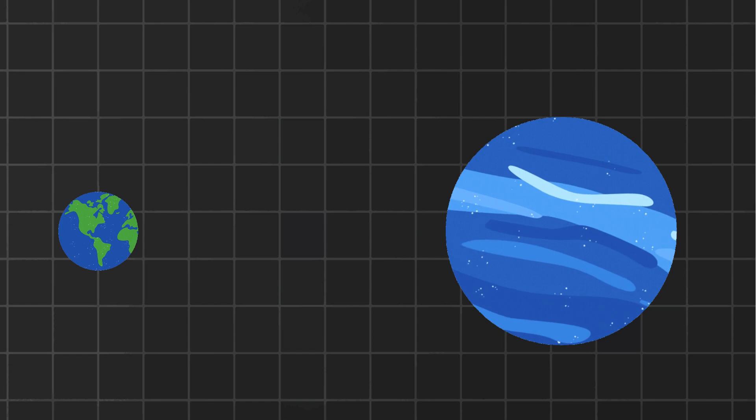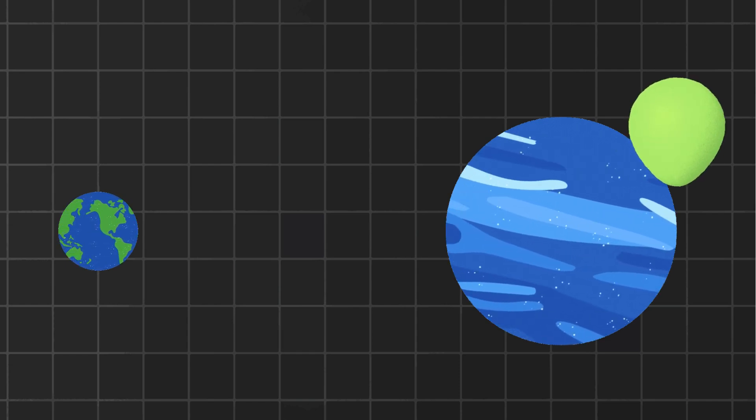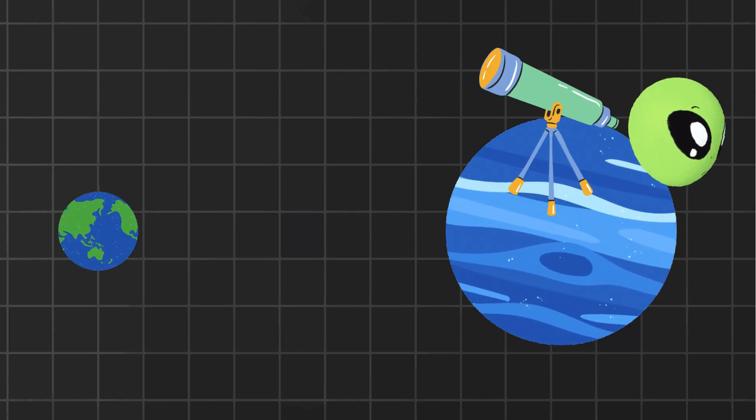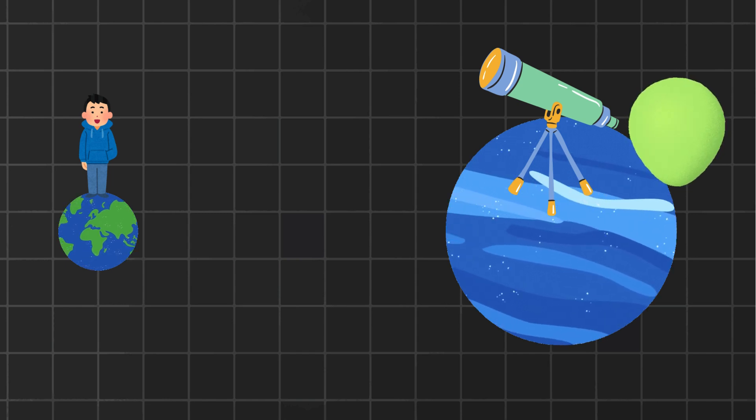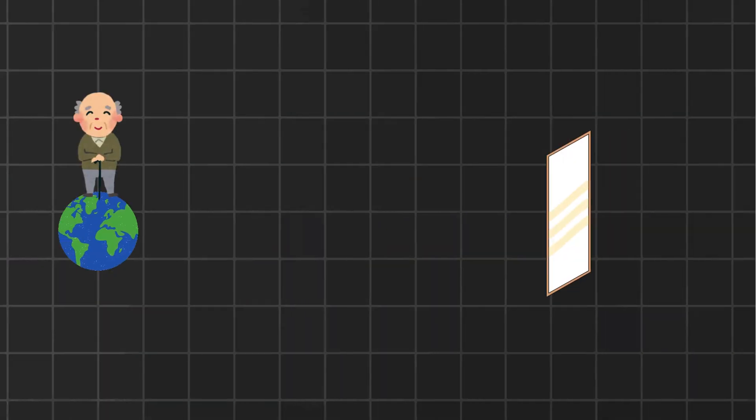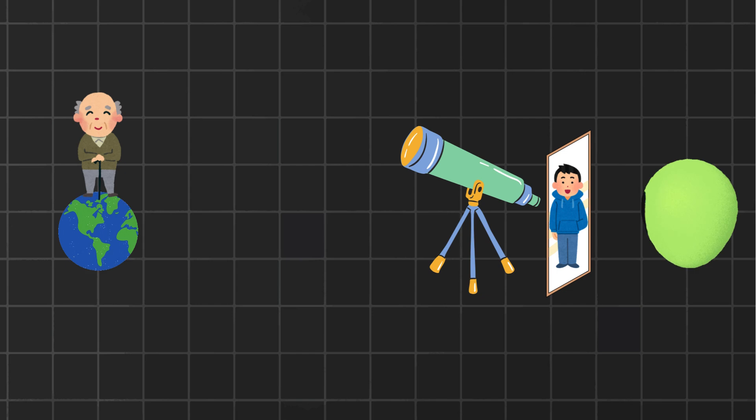Now let's flip the perspective. What if an alien near Neptune looked back at Earth through a super telescope? They wouldn't see you now. They'd see Earth as it was 4 hours ago. And if they were even farther away, say 50 light years, they could see someone being born today. Maybe even your birthday.